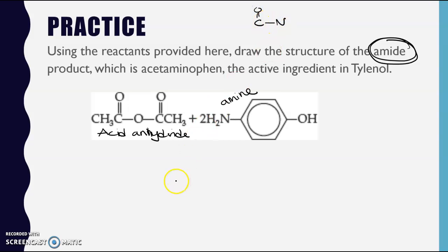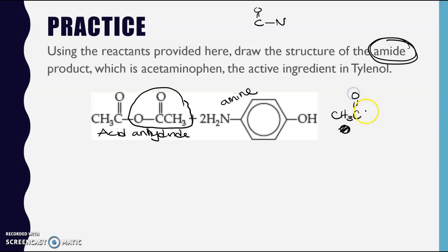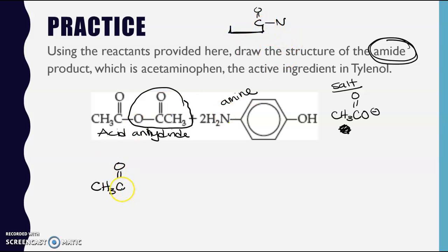An acid anhydride can react with an amine to make an amide. One portion of the anhydride is going to become a carboxylate ion for the salt - let's figure out our amide structure. This part of the acid anhydride is going to be the carbonyl part of my amide and it is going to bond with the nitrogen of one of the two amine molecules. In order for that to happen, this nitrogen has to lose a hydrogen - so rather than having two hydrogens on it, I'm only going to have one. The rest of the molecule is unaffected and stays the same.